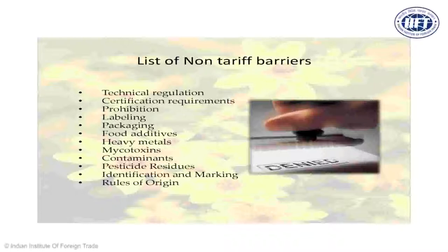There are veterinary residues to consider — if you're dealing in meat or poultry products, be very cautious about what has been fed to the animal and what veterinary residues remain. Similarly, be very cautious about pesticide residues and Maximum Residue Limits (MRL standards) across different countries. Finally, there are identification, marking, and rules of origin requirements, which we'll also cover in the RTA session.